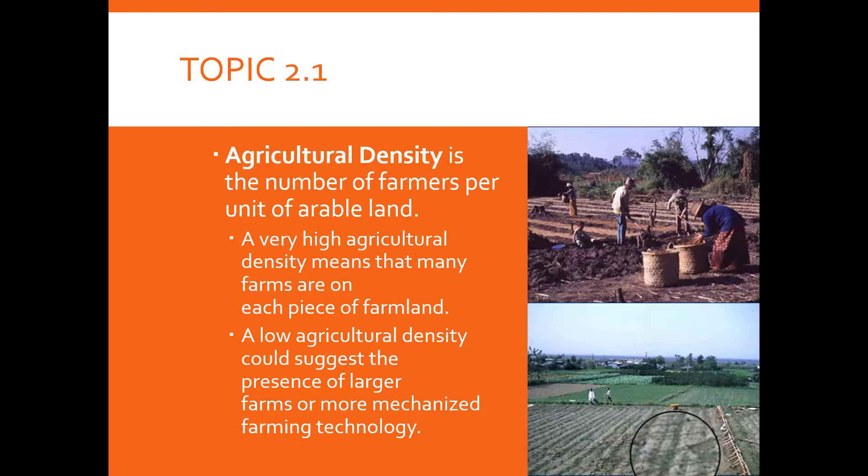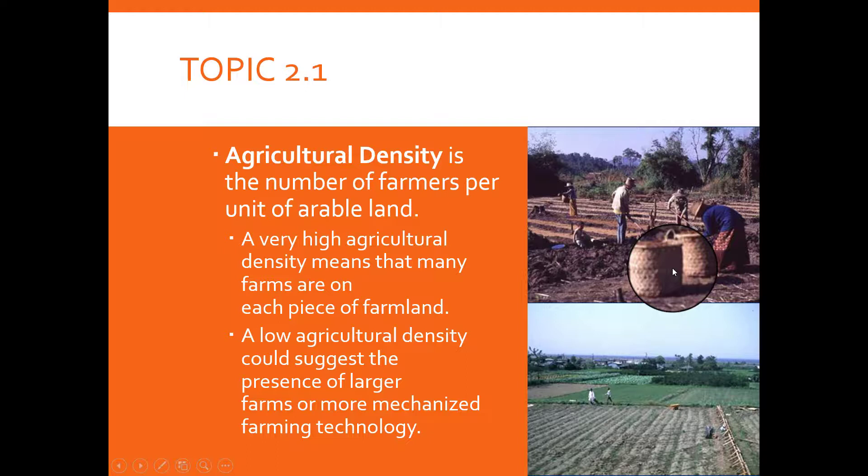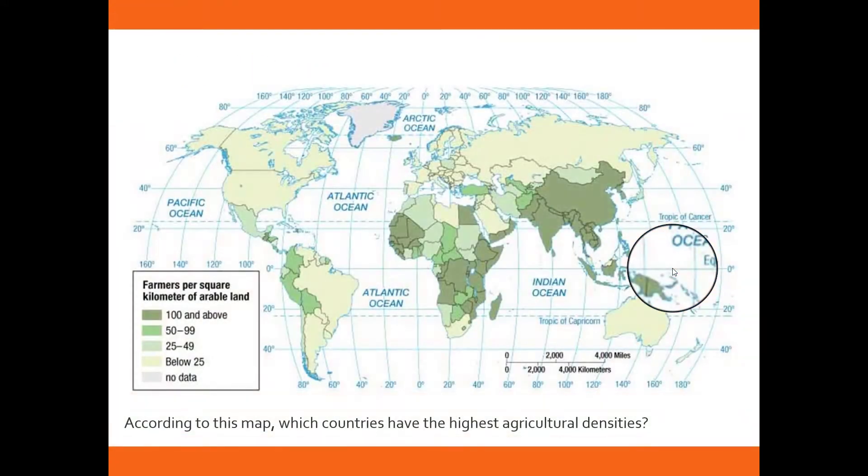If there's a low agricultural density, it's more than likely that those particular countries are MDCs because they're able to afford to have mechanized farming technology, whereas those that have a very high agricultural density are more labor intensive. They have more workers working the farm rather than having machinery because those countries can't afford it.